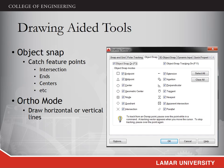Moreover, AutoCAD provides object snap functions, including 2D and 3D object snaps. These functions allow users to capture feature points of objects, such as midpoints, endpoints, tangent points, and so on. Each type of feature point has a distinct symbol so you can identify them in the drawing. Before you start a drawing, it is recommended to activate all feature points in the object snap so that you can locate points accurately.